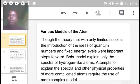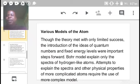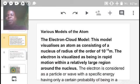This theory met with limited success. The introduction of quantum numbers and fixed energy levels were important steps forward. Bohr explained only the spectra of hydrogen. Since hydrogen is not the only element we have, the model made some difficulties in trying to explain atoms of other elements that are more complex. This made use of more complex models.